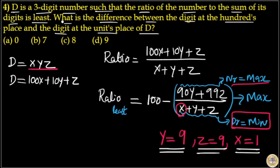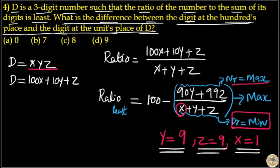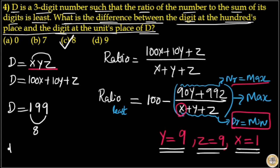Our question asks us to find the difference between the hundreds place digit and the units place digit, that is X minus Z. Here, D equals 199, with X equal to 1, Y equal to 9, and Z equal to 9. So the difference between 1 and 9 is equal to 8. Option C is your answer.